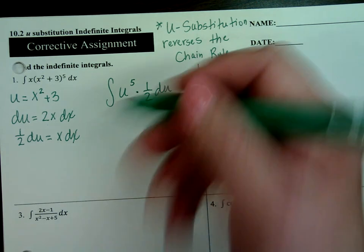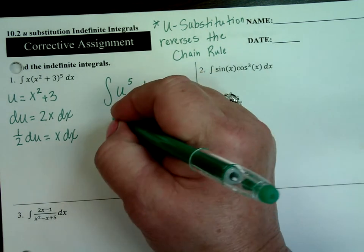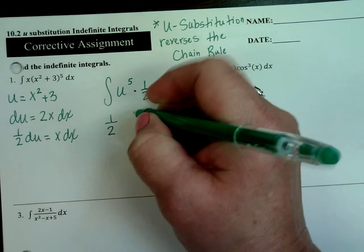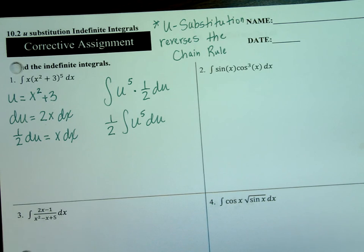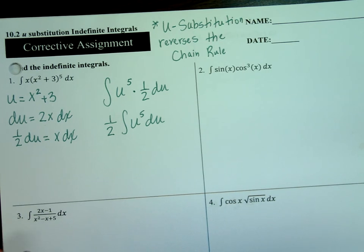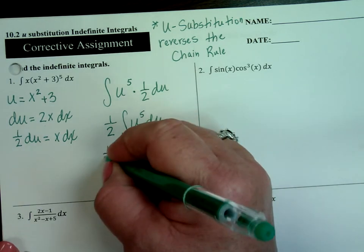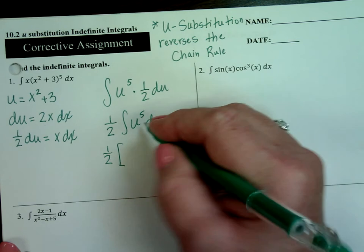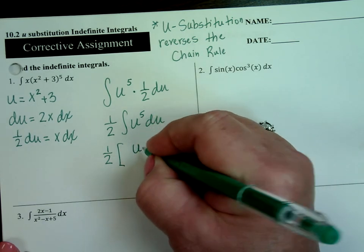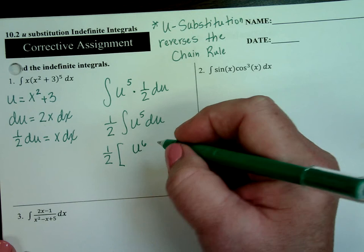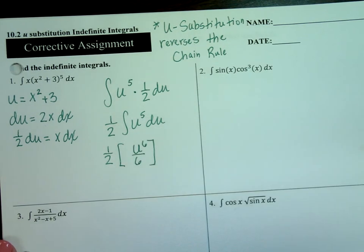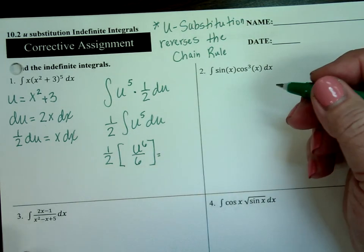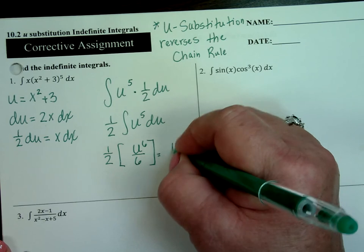I'm going to take the one-half — he's a constant so he's coming outside. One-half, u to the 5th, du. I'm cleaning it up so I can take the integral. Integral rules say: take it to one more power divided by the power. So I have one-half times u to the 6th over 6. You can make that one-sixth if you want. Then I put my answer together — this one's going to be u to the 6th over 12.